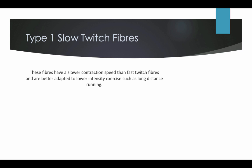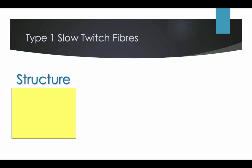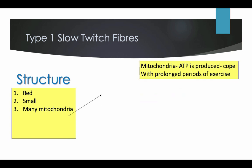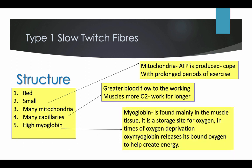Slow twitch fibres have a slower contraction speed than fast twitch fibres and are better adapted to low intensity exercise such as long distance running. They produce most of their energy aerobically and have specific characteristics that allow them to use oxygen more effectively. Structure of slow twitch fibres, type 1: they are red and small, have many mitochondria — where ATP is produced to cope with prolonged periods of exercise — many capillaries, which allow for greater blood flow to the working muscles, allowing more oxygen so they can work for longer. They have a higher myoglobin content, found mainly in muscle tissue, which acts as a storage site for oxygen. In times of oxygen deprivation, oxymyoglobin releases its bound oxygen to help create energy.